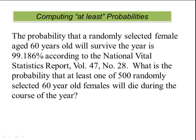Let's look at an example. What is the probability that at least one of the 500 randomly selected 60-year-old females will die during the course of the year? At least one means it could be one female or two females or three or four all the way up to all females, which is 500. So it's going to be a lot easier using our at least rule.